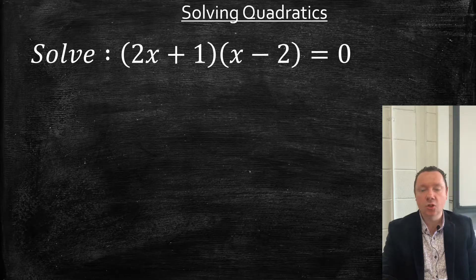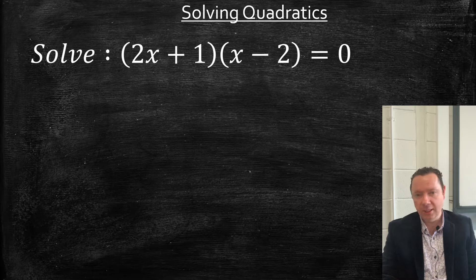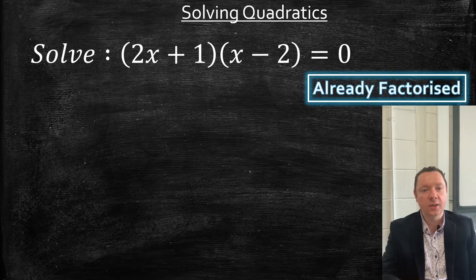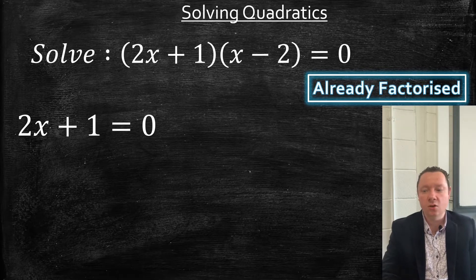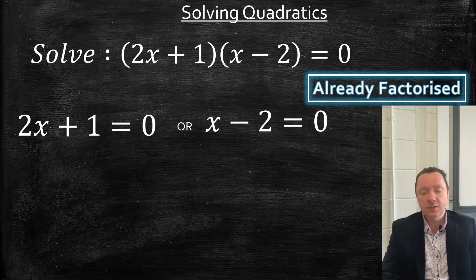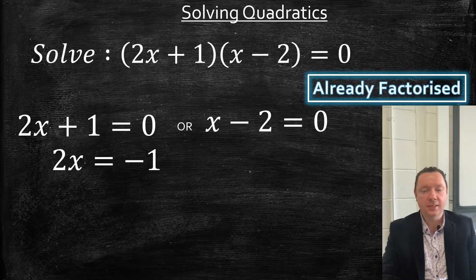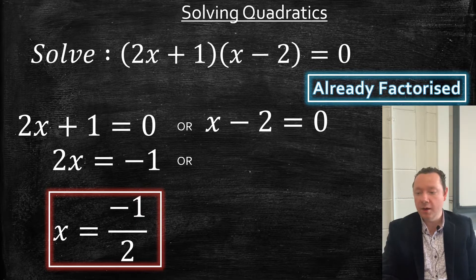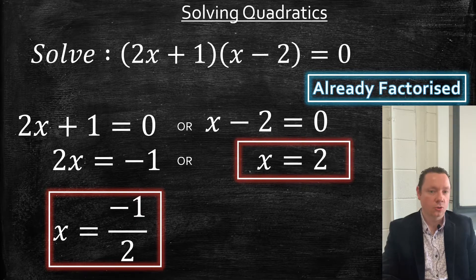Our second example: solve (2x + 1)(x − 2) equals 0. Notice this is already factorised, so we don't have to do the factorising. We just need to split it into two separate equations: 2x + 1 equals 0, and x − 2 equals 0. Solving the first one, 2x equals minus 1, therefore x is negative 1 over 2. And the second one, x is equal to 2. Already factorised — done.